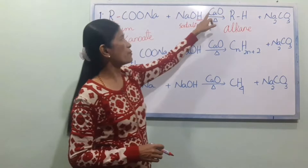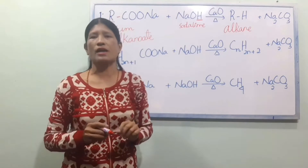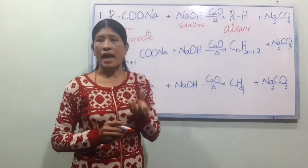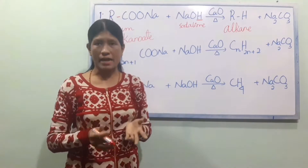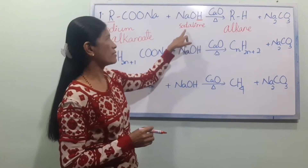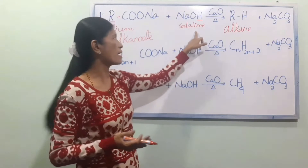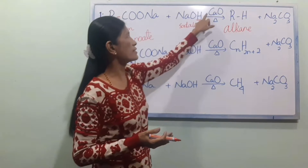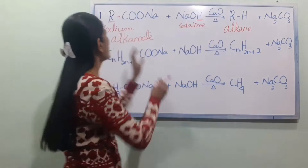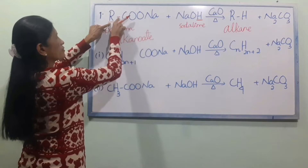RCOO-Na is called the sodium salt of a carboxylic acid. NaOH is sodium hydroxide, also known as caustic soda. CaO is calcium oxide. Together, caustic soda and CaO are used as reagents in this preparation. COONE refers to the carboxylate (single bond) group in these compounds.